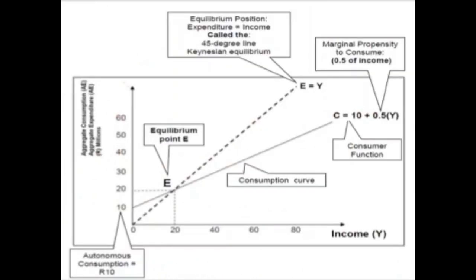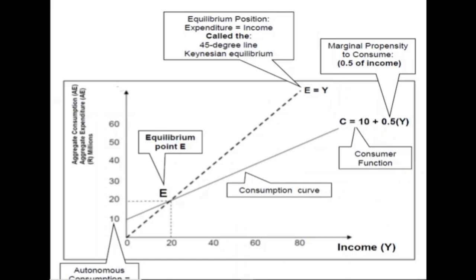Here's a nice graph. Don't let it make you nervous — it's just another way to show how we can calculate the multiplier. On this axis is our consumption, and this is our income. I prefer to use the words expenditure and income. This line is what we call a scale line, a 45-degree line, or a Keynesian equilibrium.